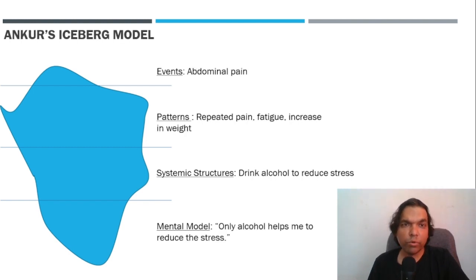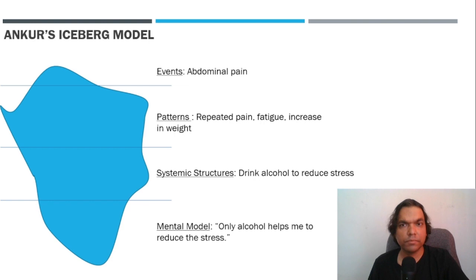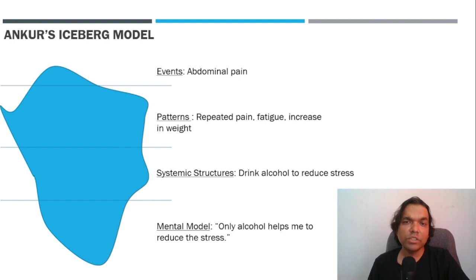In episode 4, we came across Ankur's health crisis. If we draw the iceberg model of Ankur's health problem, we can see that at the event level he was suffering from abdominal pain. If Ankur would have noted the patterns, he would have noticed that his health was deteriorating, his weight was increasing, and he also suffered from fatigue. At the structures level, he was consuming alcohol to reduce his stress. The mental model that he had was that alcohol is the only way to reduce stress.